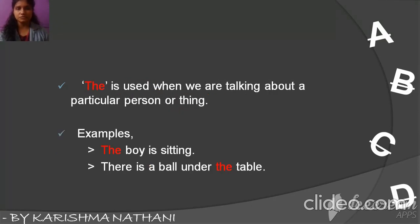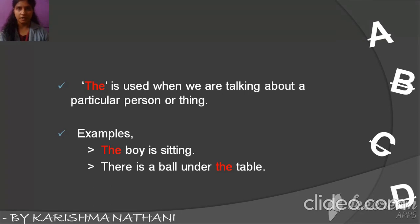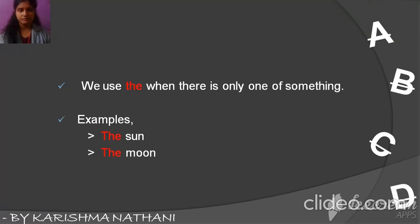The is used when we are talking about a particular person or a particular thing. For example, the boy is sitting — we are talking about one specific boy. There is a ball under the table — table is a particular thing, so: the table. We also use THE when there is only one of something.